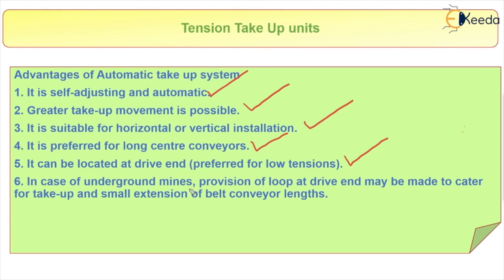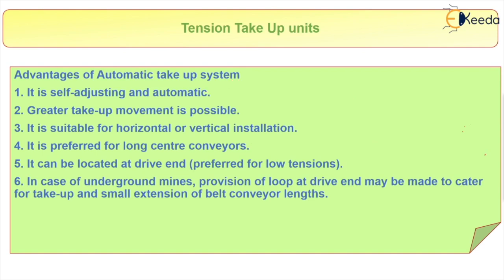In the case of underground mines, the provision of a loop at the drive end may be made to cater for take-up and small extension of belt conveyors. So these are the features of the automatic take-up tension system, and that is why it is most commonly used.